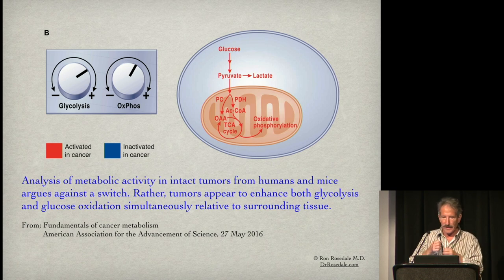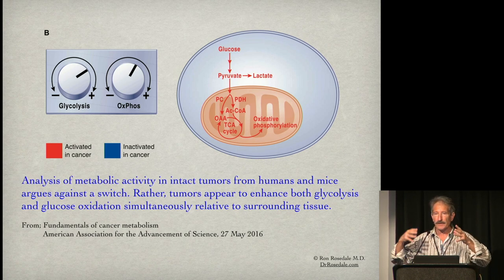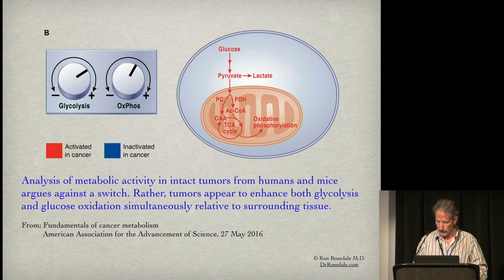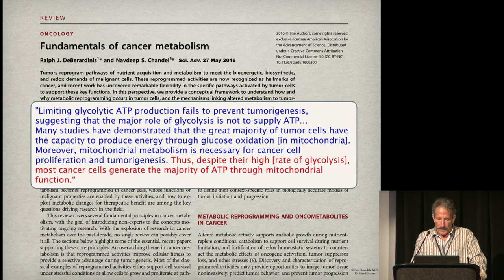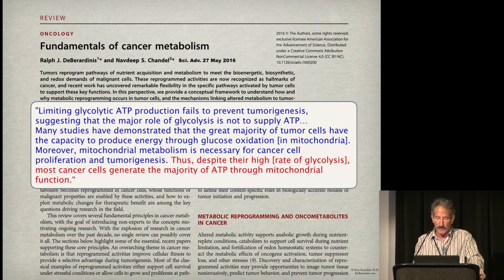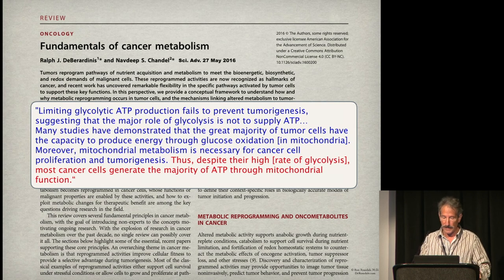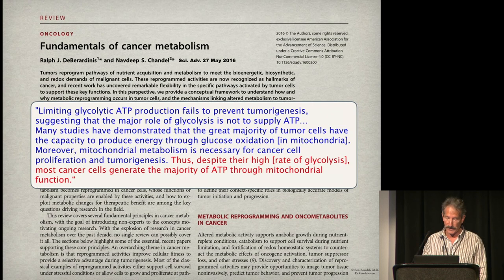There are two kinds of metabolism. It's not just about burning fuel — even more important for any proliferating cell is how rapidly you can accumulate the parts needed to make new cells. Studies show that limiting glycolytic ATP production failed to prevent tumorigenesis, suggesting the major role of glycolysis is not even to supply ATP. Many studies demonstrate that the great majority of tumor cells can produce energy through glucose oxidation in mitochondria, and that mitochondrial metabolism is necessary for cancer cell proliferation. Despite their high rate of glycolysis, most cancer cells generate the majority of their ATP through mitochondrial function.